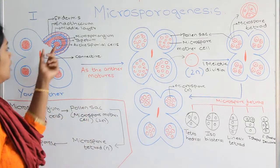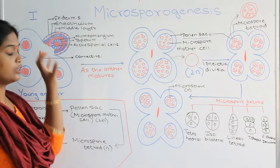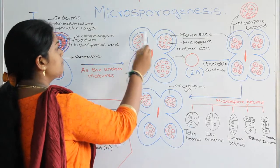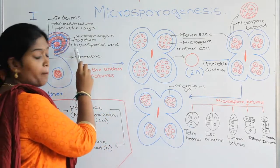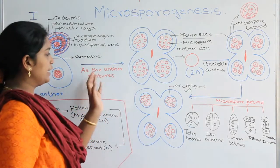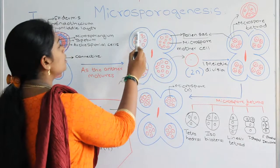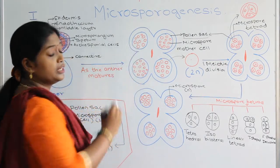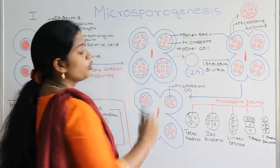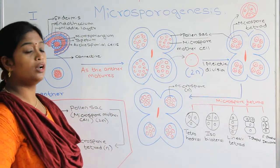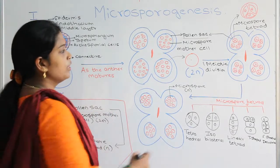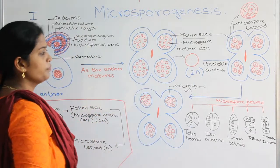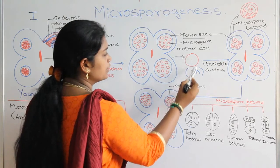As the anther matures, the microsporangium grows in size and becomes bigger. As it enlarges, the archesporial cells, which were compact, form spaces between them. In the mature anther, the microsporangium is now called the pollen sac, and the archesporial cells that have formed spaces between them are called the microspore mother cell, or pollen mother cell. The pollen mother cell thus formed is diploid in nature.